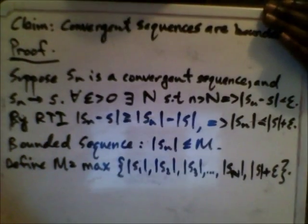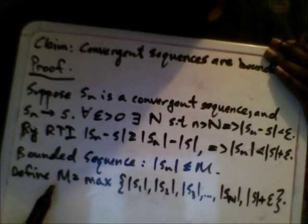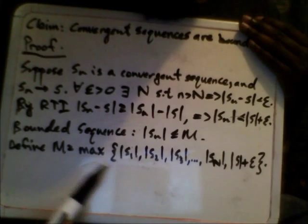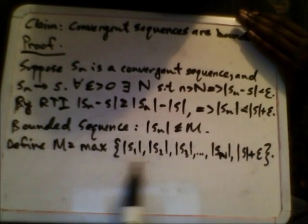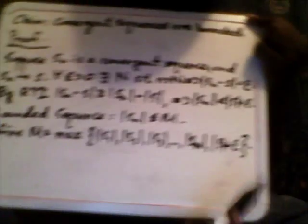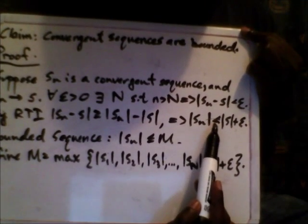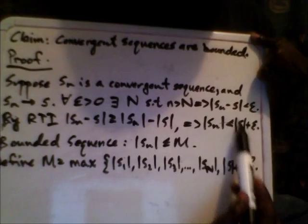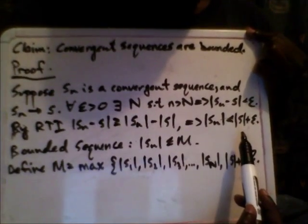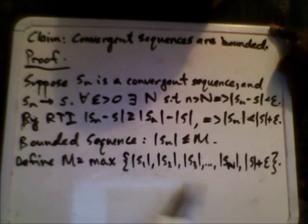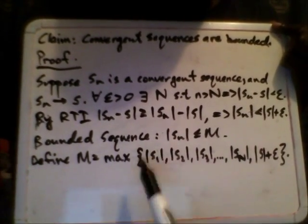We define M to be the maximum of a specific set. Notice that Sₙ is less than the absolute value of S plus epsilon, so M has to be greater than or equal to |Sₙ|. This could obviously be one selection of M. But in this case, we have M being the max of all these things. Why? Let me show you — a picture is the best way to illustrate.